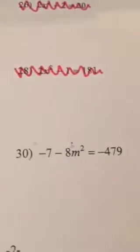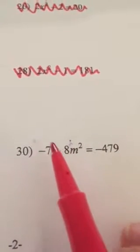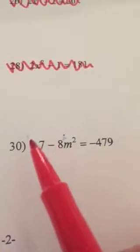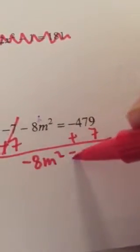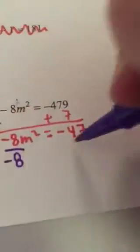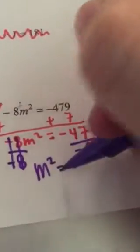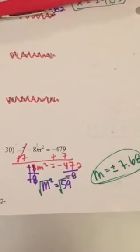Our last example for the square root method: can I add or subtract anything? I can subtract — there are a few ways you could go about this, but I'm going to get the number with the other number over here and leave m squared alone. So I'm going to add that 7 to both sides. Can I multiply or divide? Now once I get m squared by itself, I'm going to square root it: m equals plus or minus 7.68. And that is how you use the square root method to solve a quadratic equation.